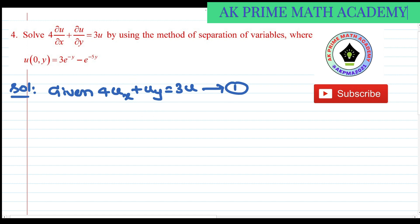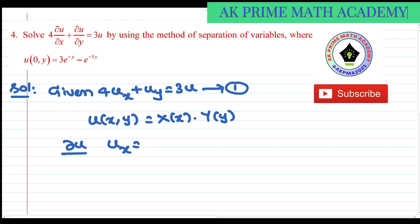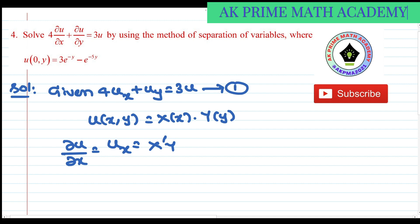The solution of Equation 1 is: u(x, y) = X(x) · Y(y). Here, u_x means partially differentiating u with respect to x, so where we have u_x we write X'·Y. Similarly, u_y means we write X·Y', and where we have u alone we write X·Y.